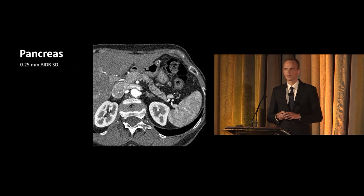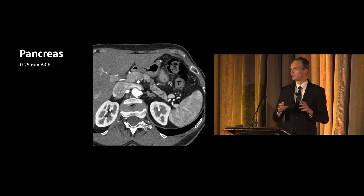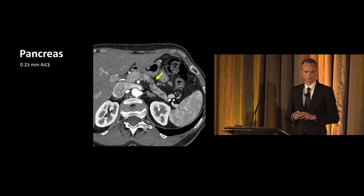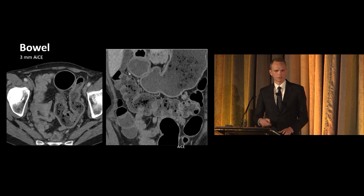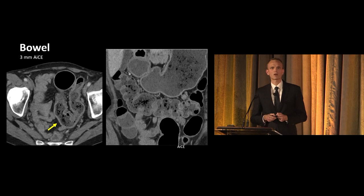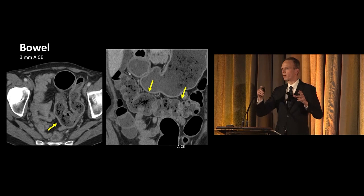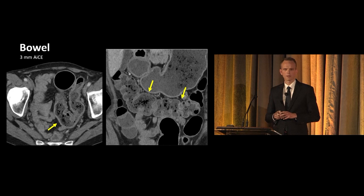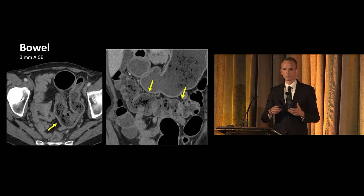Here's a pancreatic scan at 0.25 millimeters reconstructed with AIDR 3D. Applying ACE, we see a hypovascular lesion in the pancreatic body, suspicious for a pancreatic tumor. I particularly like how well the bowel walls are visible with the new technique — for example, here in the pelvis, which is traditionally a region with many artifacts. Also on the coronal images, you can nicely appreciate the bowel wall and see that there's no bowel wall thickening. The real 3D data sets look even better, and it's difficult to appreciate from a projector alone, so I'd like to invite you to have a look at the booth.